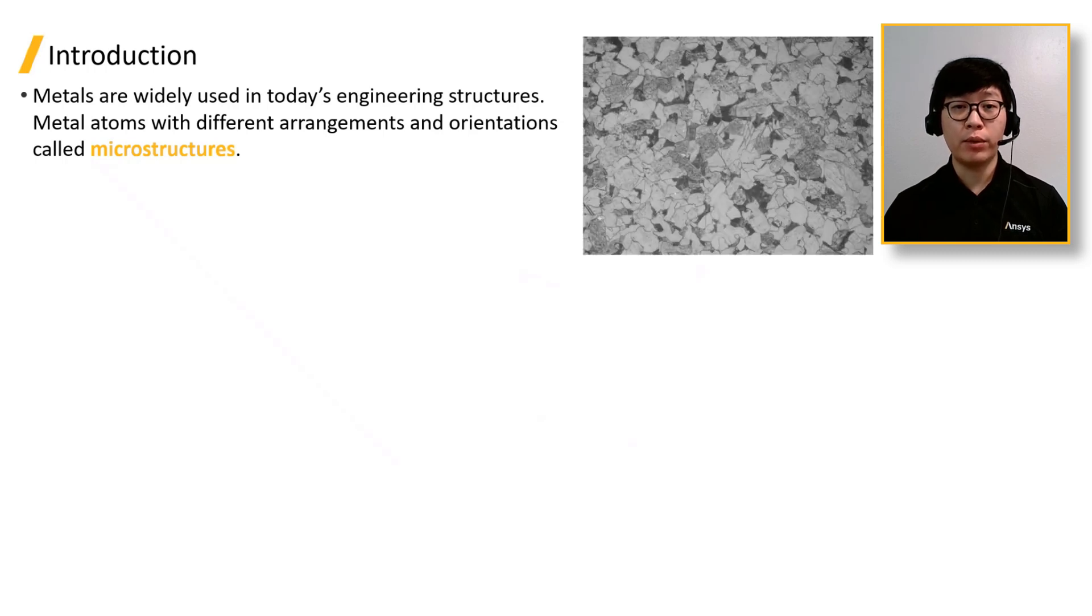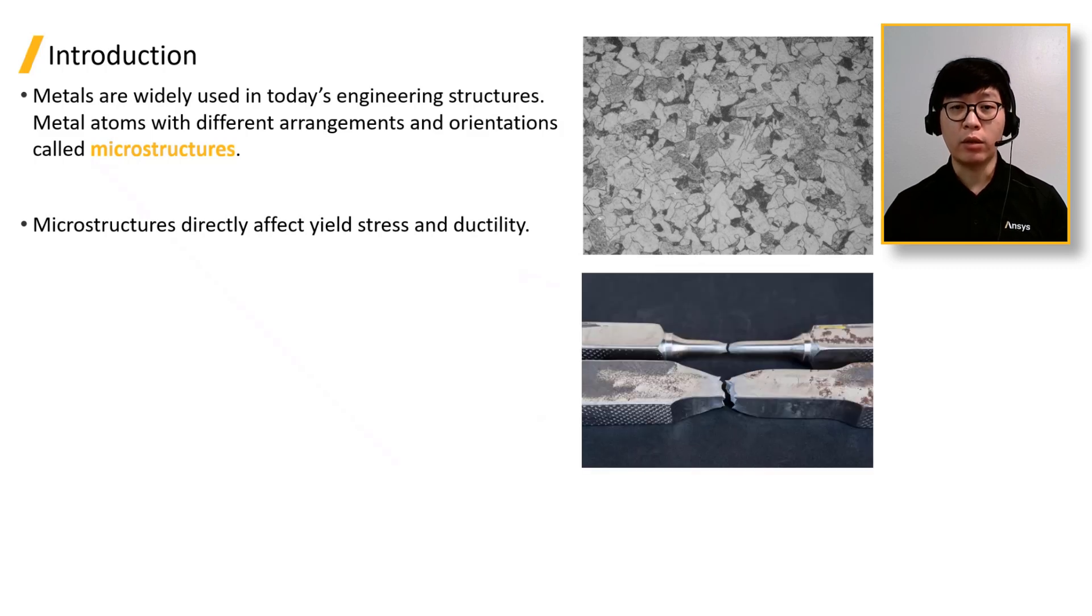In this figure, we show an example of a microstructure observed under optical microscope. Microstructures directly affect the mechanical properties, such as the yield stress and ductility of the engineering component.